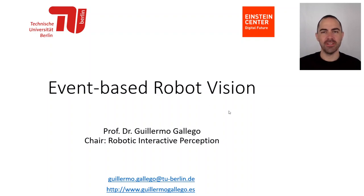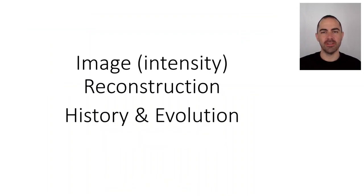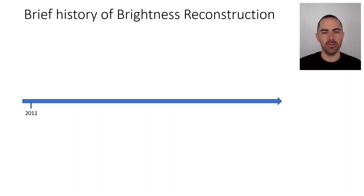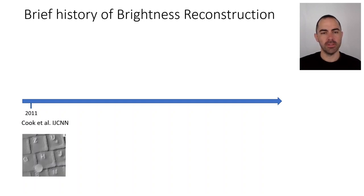Hello, my name is Guillermo Gallego and in this video we will take a look at the history and evolution of the topic of image intensity reconstruction from events. Remember that the DVS — the dynamic vision sensor — was commercially available and the journal paper came out in around 2008-2009. A few years later there were already some papers trying to do image reconstruction with the DVS, and probably the first one is this one from 2011 from Kuk et al. and collaborators, people from the Institute of Neuroinformatics in Zurich.